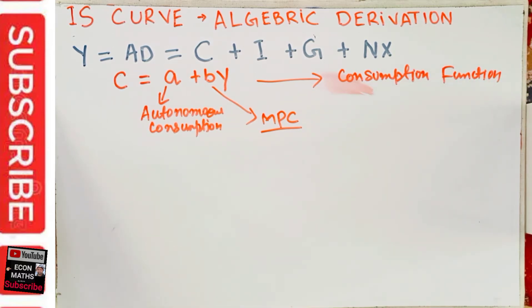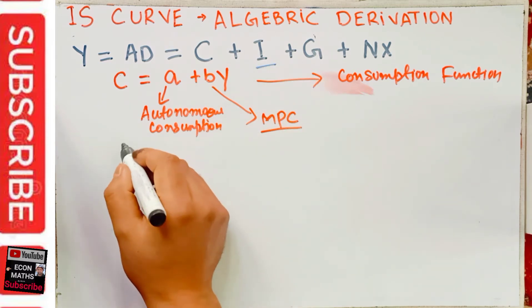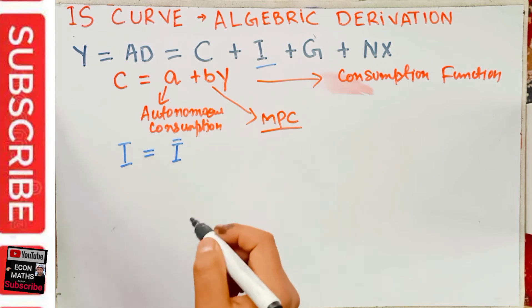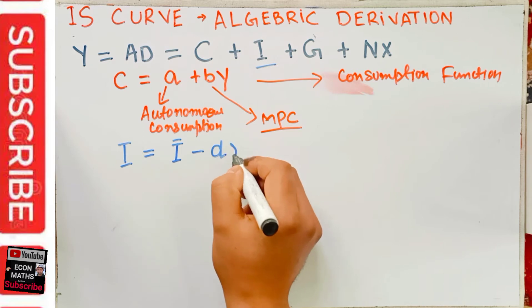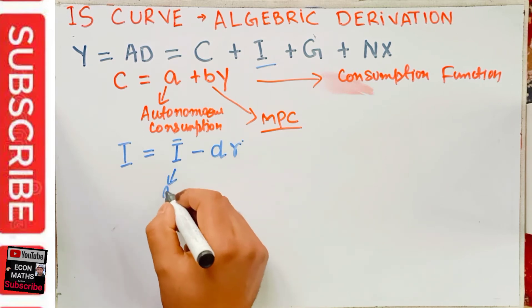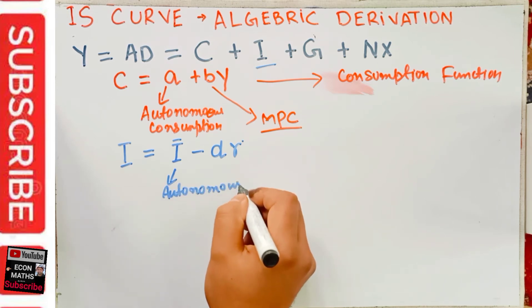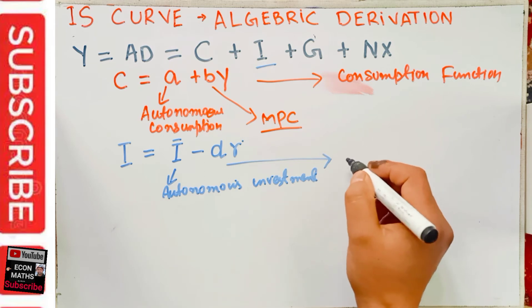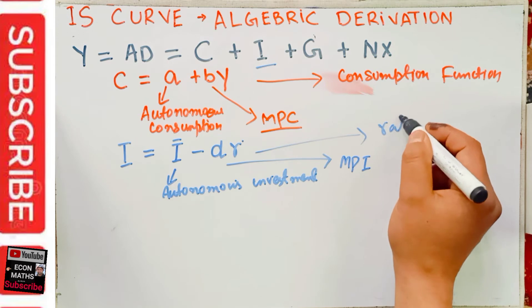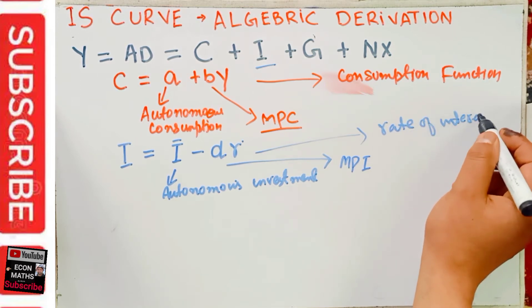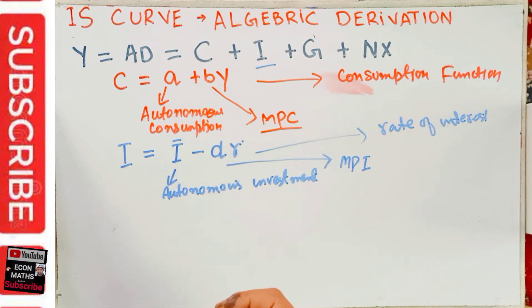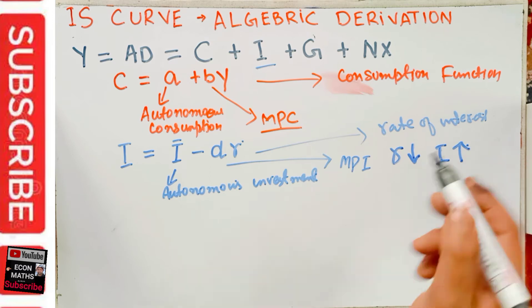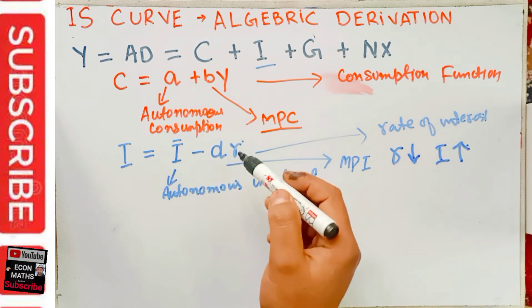Similarly, the investment function is given by: I equals I-bar minus dR, where I-bar is the autonomous investment, 'd' is our marginal propensity to invest (MPI), and R is the rate of interest. This means investment is a negative function of the rate of interest — when the rate of interest is low, investment will be high.